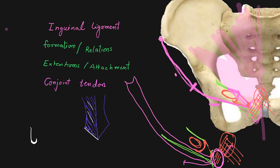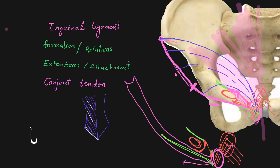The conjoint tendon is formed by the fusion of the lowest aponeurotic fibers of the internal oblique and transverse abdominis muscles, and it attaches to the pubic crest. The lateral two-thirds of the inguinal ligament gives origin to the internal oblique; some of these fibers pass medially upward and then medially downward toward the pubic crest and pectineal line of the pubis. Similarly, fibers from the transverse abdominis arise from the lateral one-third of the inguinal ligament and follow the same direction, attaching to the pectineal line. This combined attachment is called the conjoint tendon.